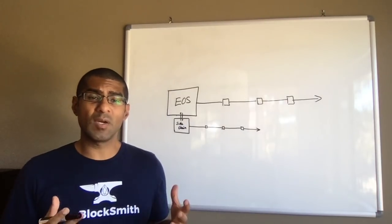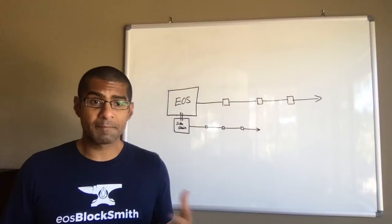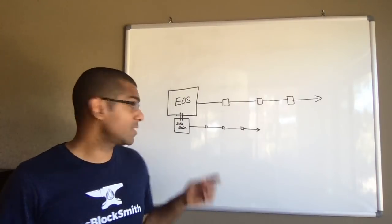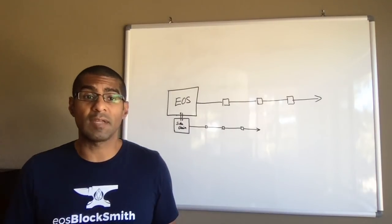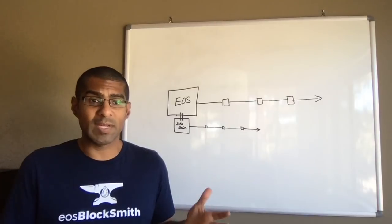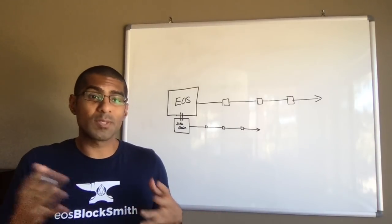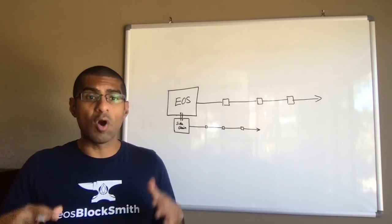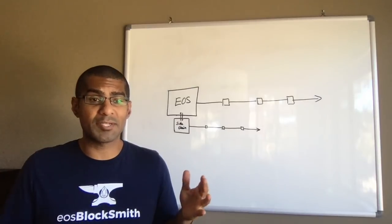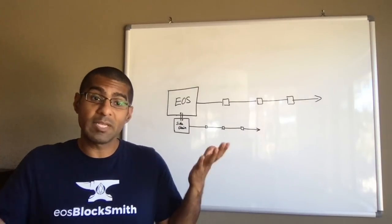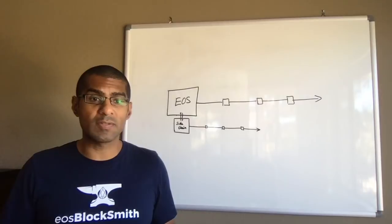Sidechains are also a way for the EOS platform to scale. So like I mentioned earlier, sidechains are their own blockchains with their own capacity for transactions. As more and more sidechains get added on, the overall capacity for transactions of the EOS ecosystem increases and that's called horizontal scaling.